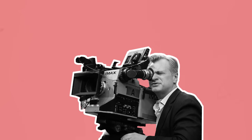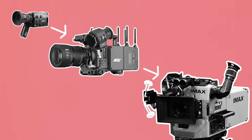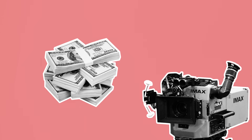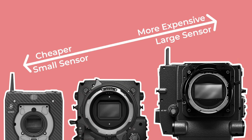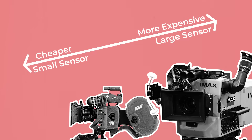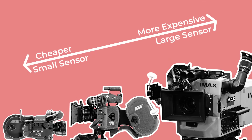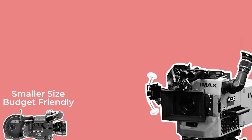There are also the all-important practical implications to be considered. Generally speaking, the larger the format, the larger the form factor the camera will be to house it and the more expensive it is to shoot on. When comparing all the digital formats, renting the cameras and lenses for 65mm will be more expensive than a Super 35 camera. Likewise, when comparing film formats, 16mm is vastly cheaper than IMAX. So broadly speaking, smaller formats tend to be more budget friendly and come in a smaller package.